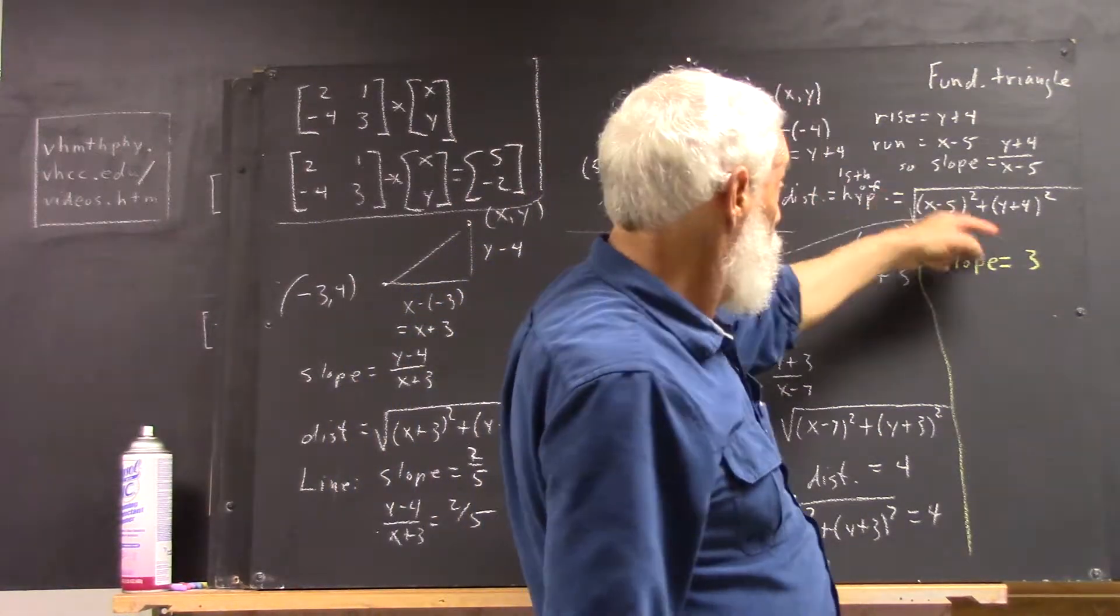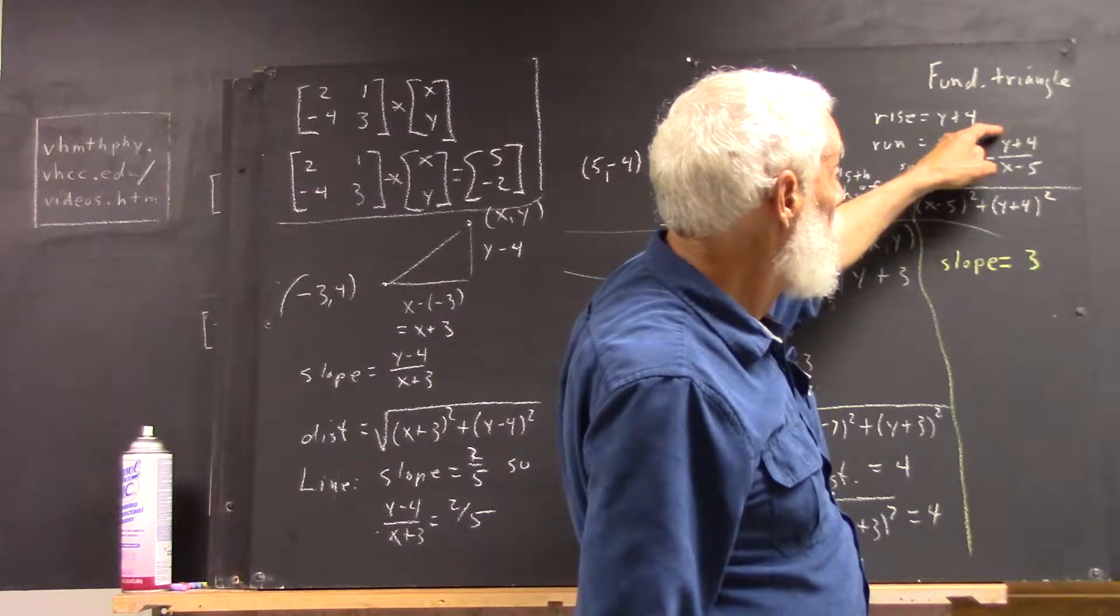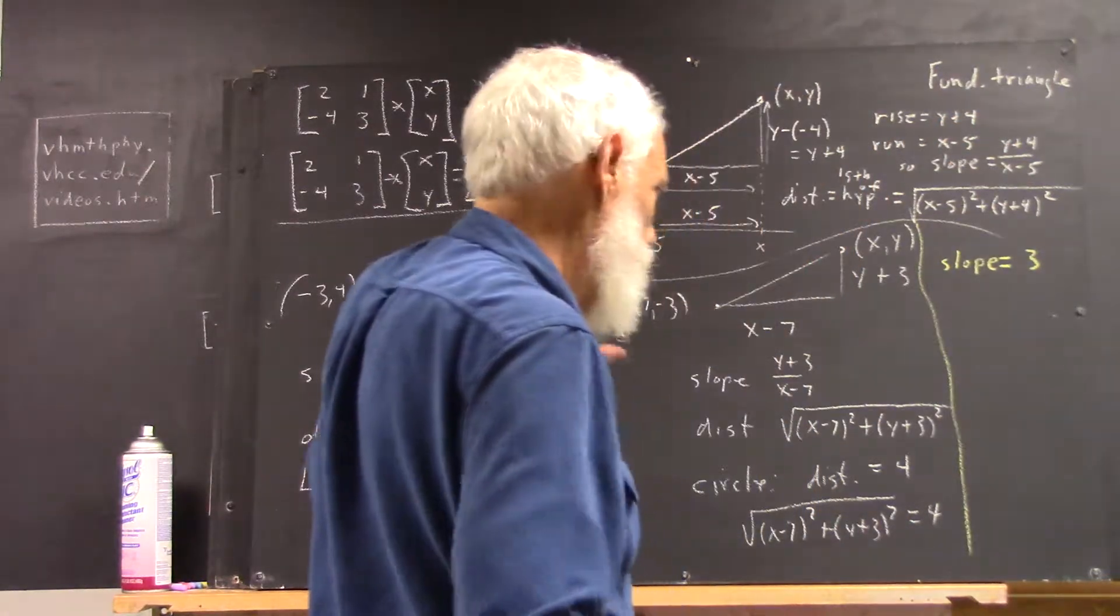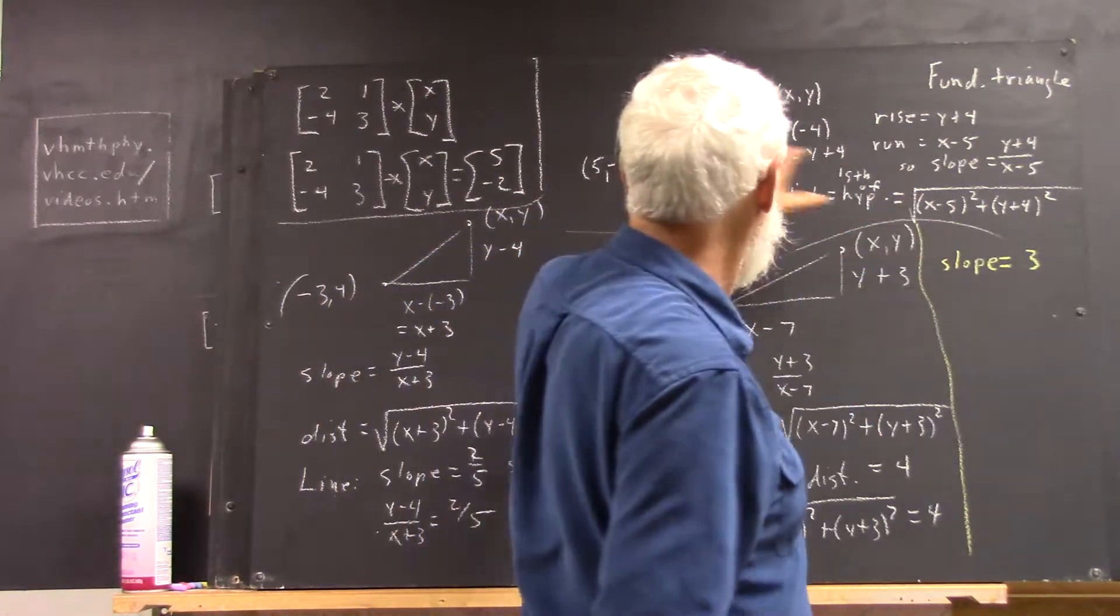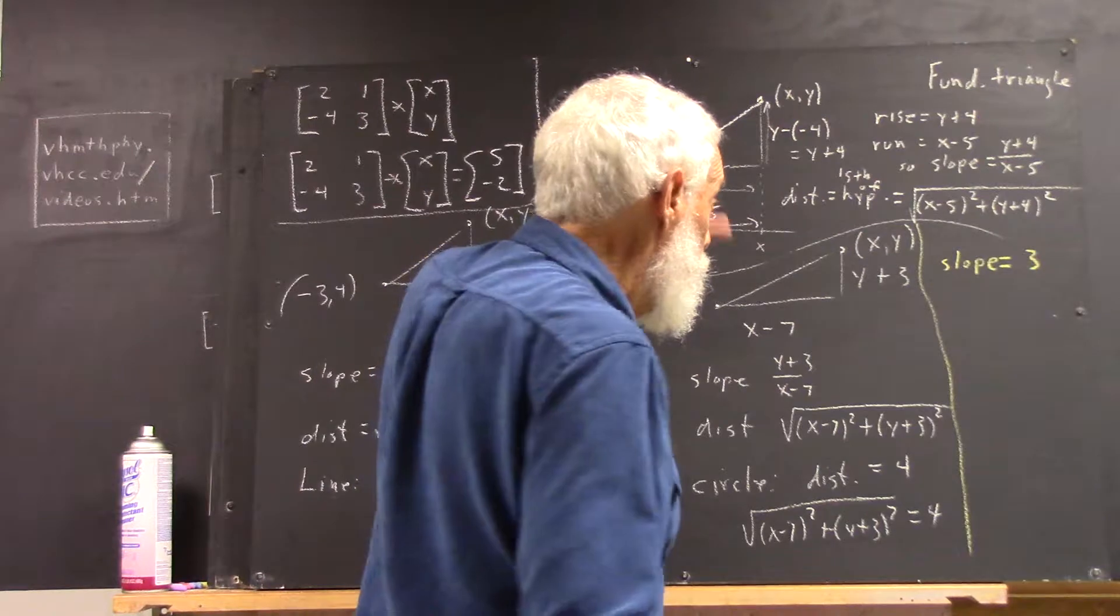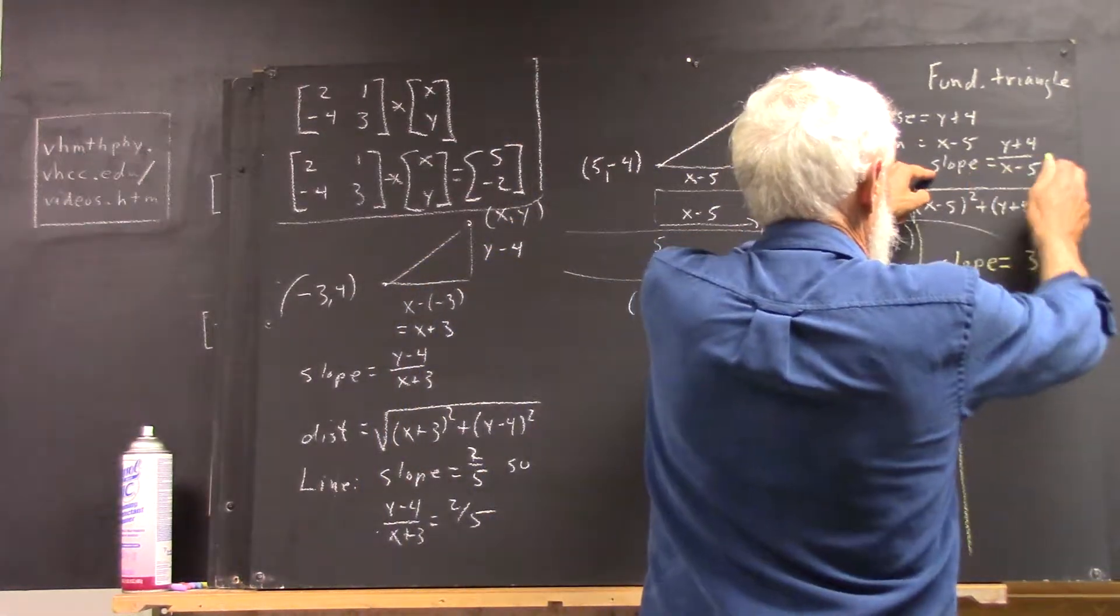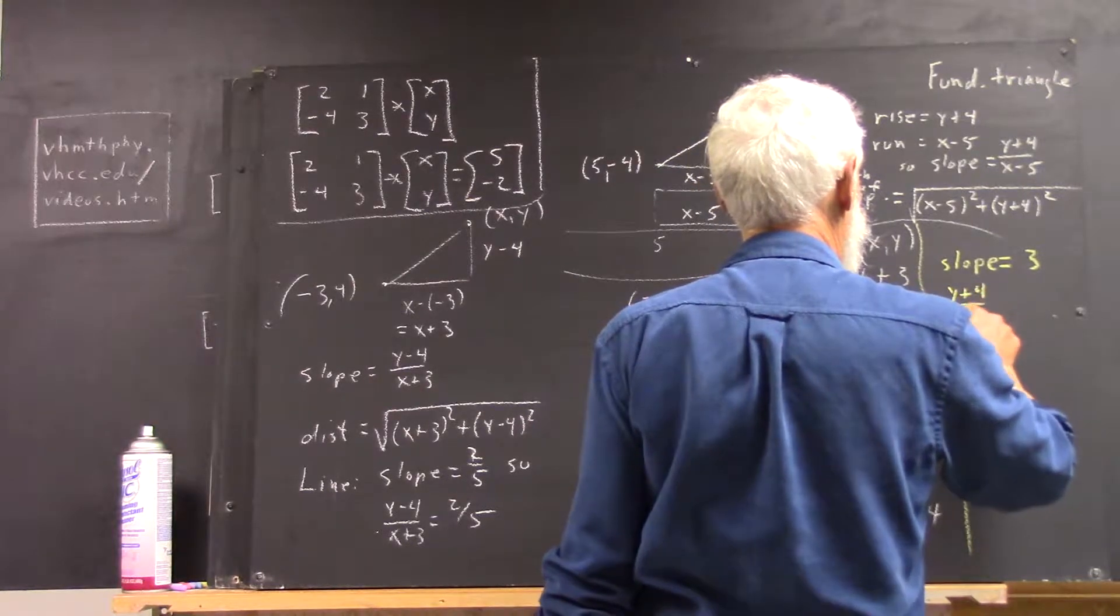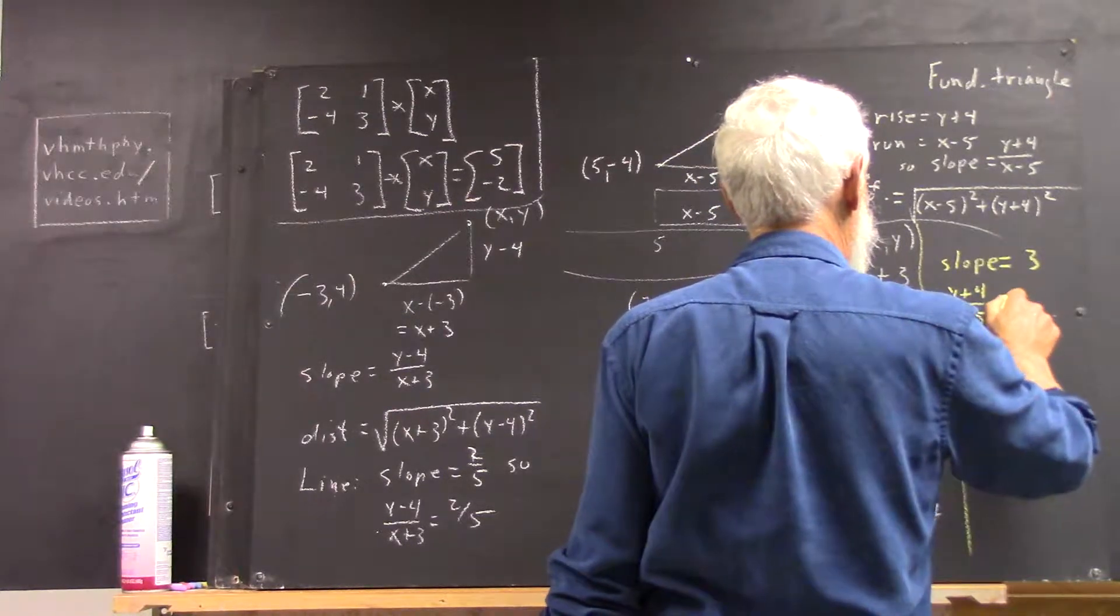Well, right here, we've written slope in terms of y, 4, x, and negative 5. We've written slope in terms of the quantities that we started with. So, instead of slope, we write what the slope is equal to, which is y plus 4 over x minus 5.